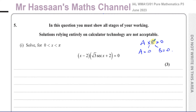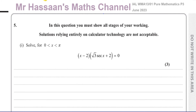If the product equals anything else, you can't say either one of them is that number — like if a × b = 5, you can't say a is 5 or b is 5. But if the product is zero, then one of them must be zero. So we can say either x − 2 = 0, in which case x = 2.